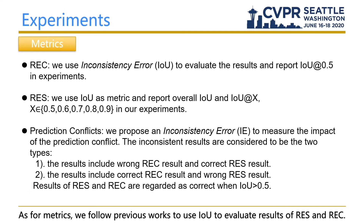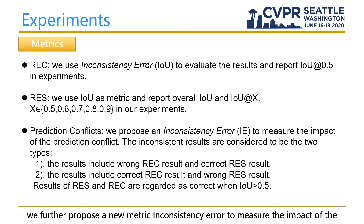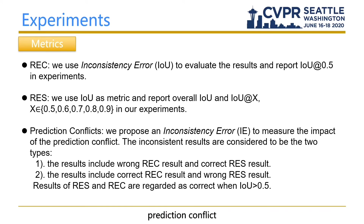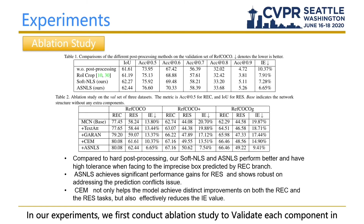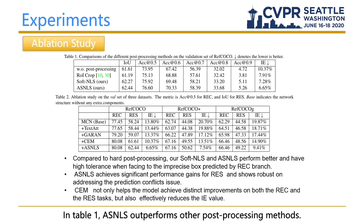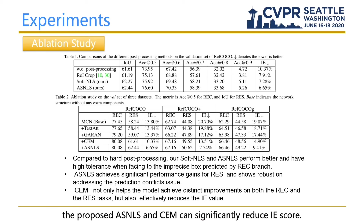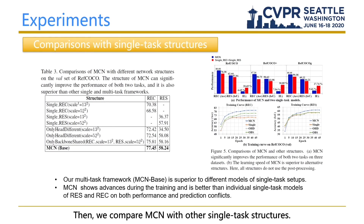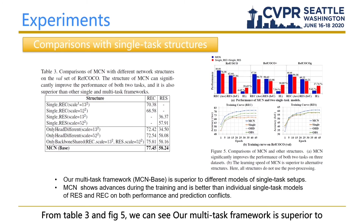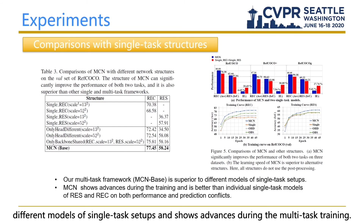As for metrics, we follow previous works and use IOU to evaluate REC and RIS results. We further propose a new metric, Inconsistency Error (IE), to measure the impact of prediction conflicts. In our ablation study, ASNLS outperforms other post-processing methods (Table 1), and each design contributes to performance (Table 2). The proposed ASNLS and CEM can significantly reduce the IE score. We also compare MCN with other single-task structures in Table 3 and Fig 5, showing our multi-task framework is superior to single-task setups.